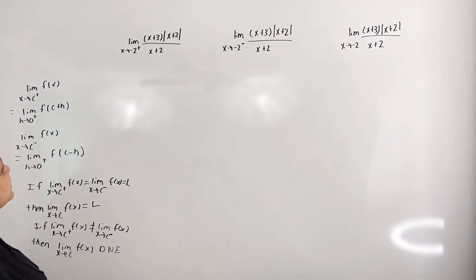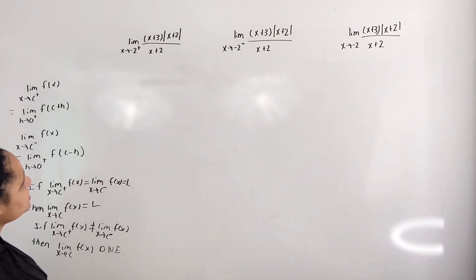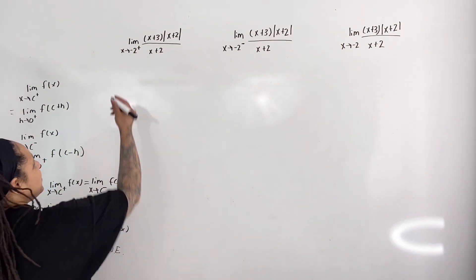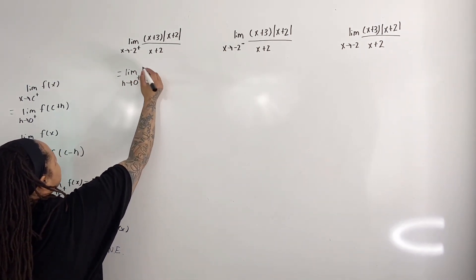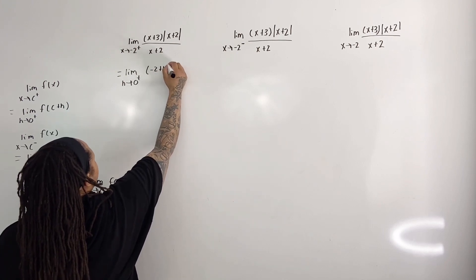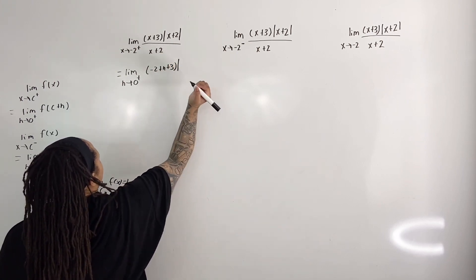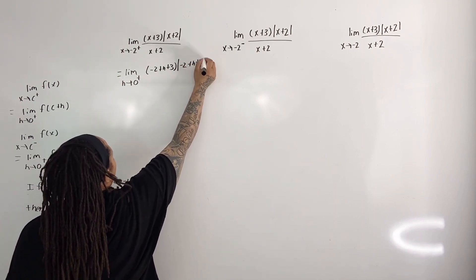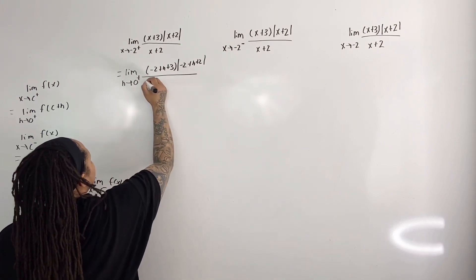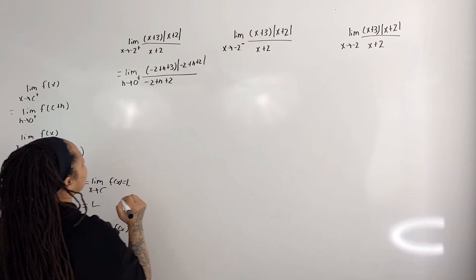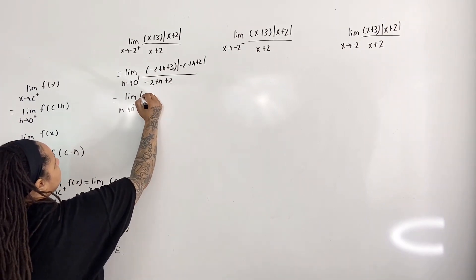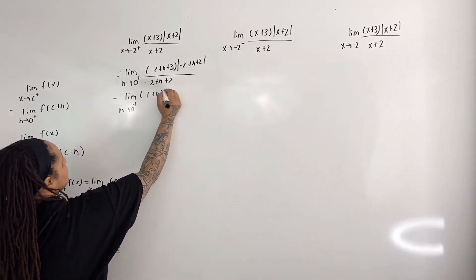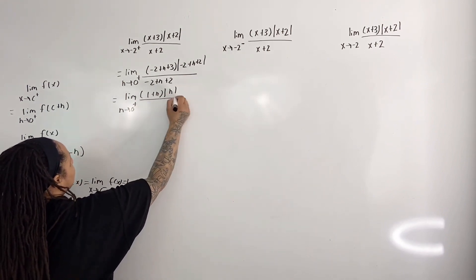For the first example, we have the limit as x approaches negative 2 from the right of x plus 3 times the absolute value of x plus 2 all over x plus 2. This equals the limit as h approaches 0 from the right of (negative 2 plus h plus 3) times the absolute value of (negative 2 plus h plus 2) all over (negative 2 plus h plus 2). This simplifies to the limit as h approaches 0 from the right of (1 plus h) times the absolute value of h all over h.